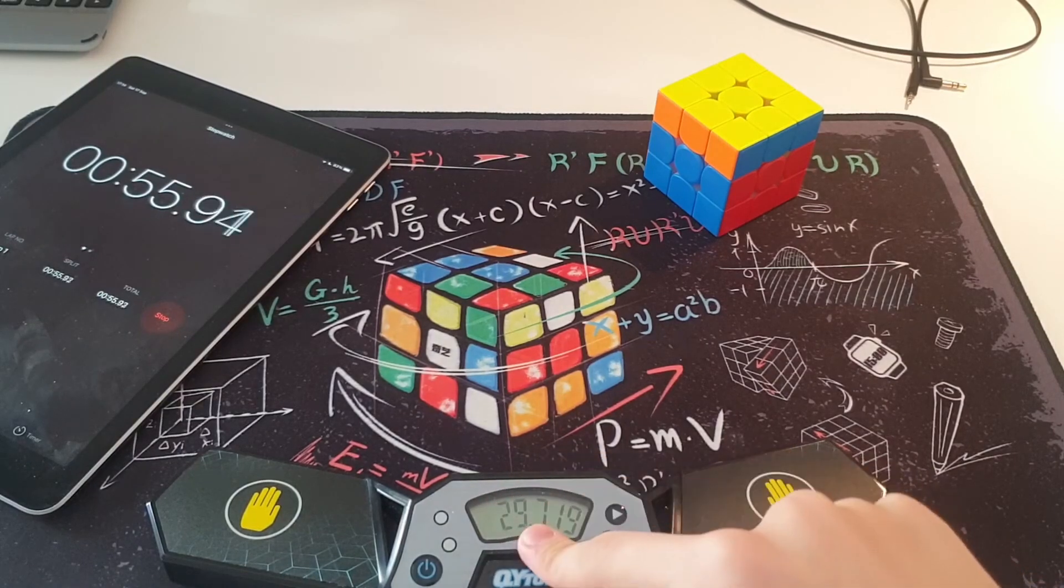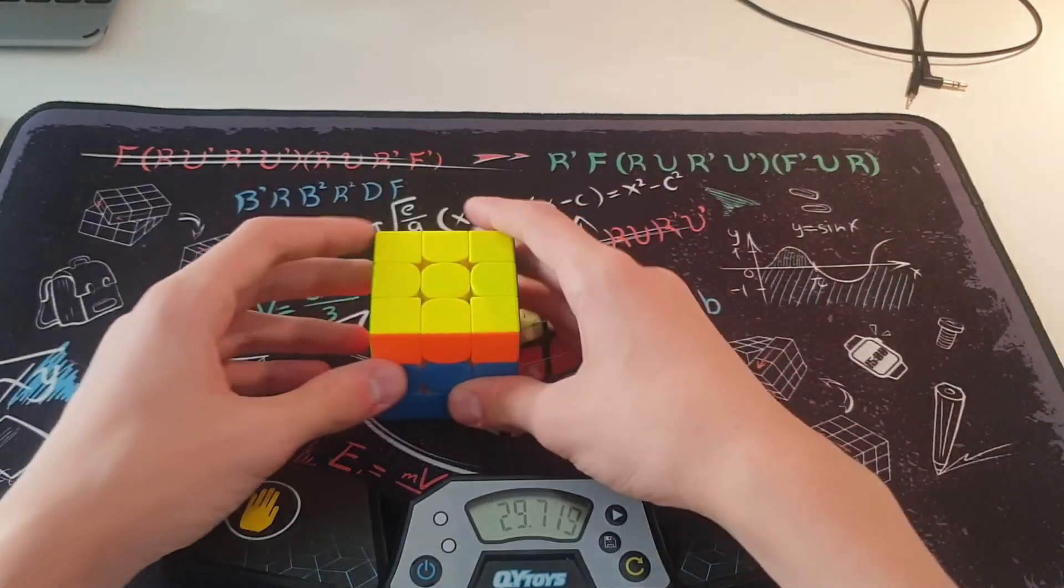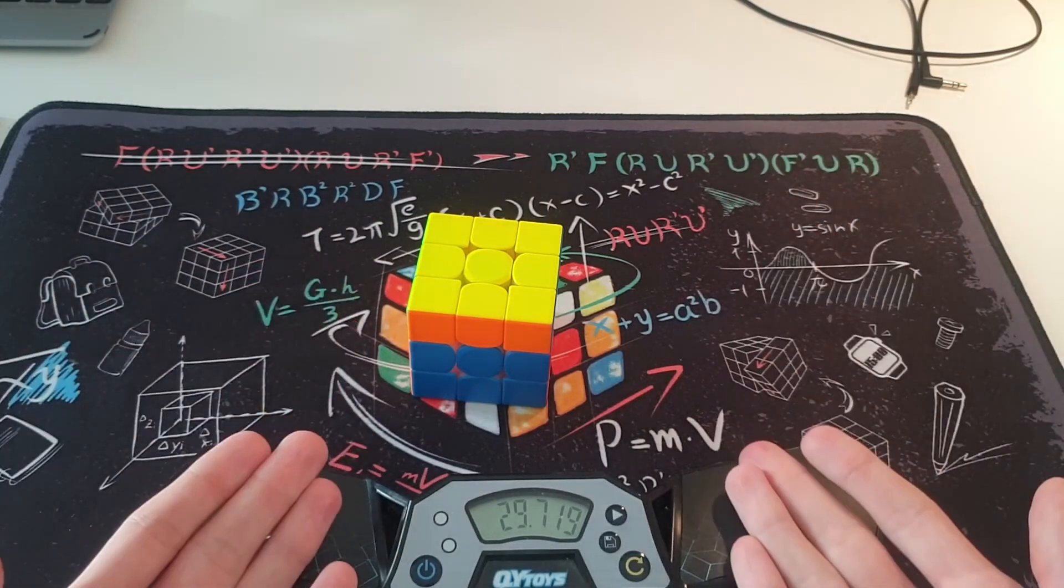We got a 29 seconds solve. Add 16 on and we have a 45 seconds solve, if I'm correct. But yeah, that is how you get a plus 16. This is the most useless tutorial ever.